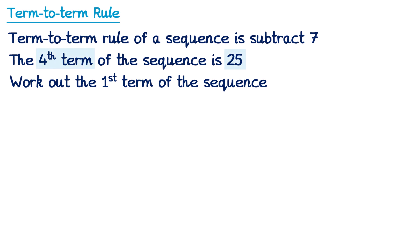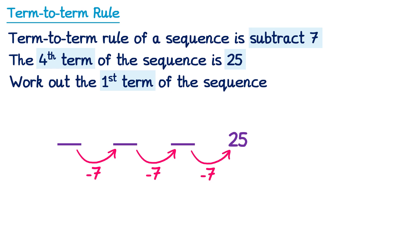So I'm going to draw a line for the first term, one for the second term, and the third term, but we know the fourth term. That's 25. We've been asked to work out the first term of the sequence, and we have the term-to-term rule, which is subtract 7. This means if I wanted to go from the first term to the second term, I would subtract 7, and the same for the second to the third, and the third to the fourth.